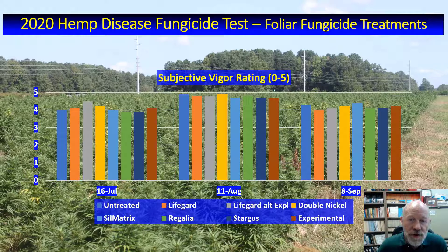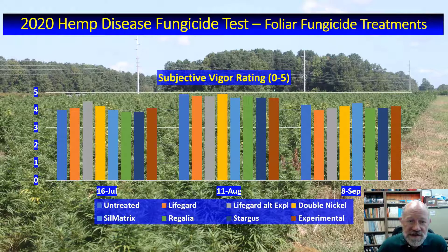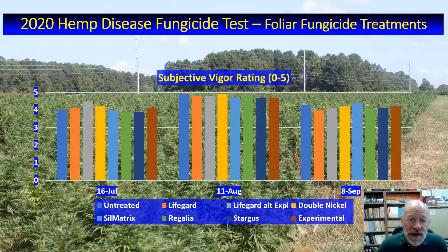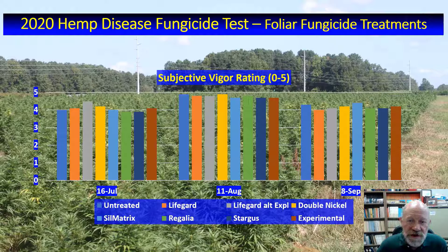We basically saw no significant differences in plant vigor that can be associated with our foliar fungicide treatments. While you may notice some small differences among the treatments on each observation date, don't be fooled into thinking these are real. Each bar represents an average of 12 observations, and statistical analysis indicated quite strongly that none of these apparent small differences were reliable. Knowing that none of our treatments work helps us focus on other potential treatments, so these results are really progress, even though they're not the type of progress that we would prefer.